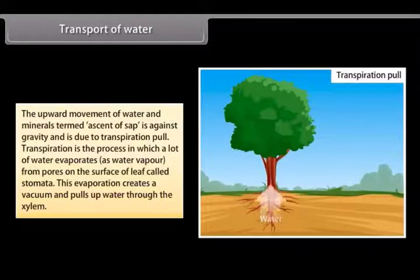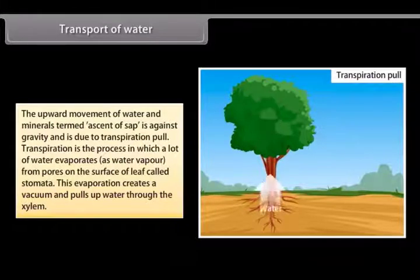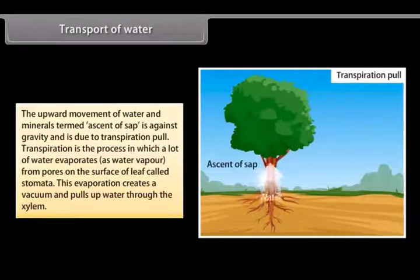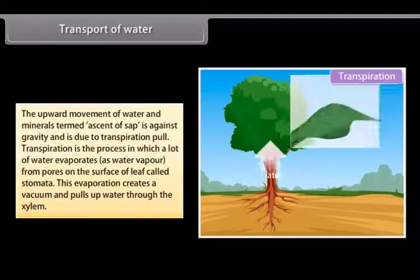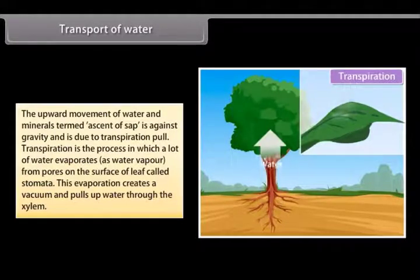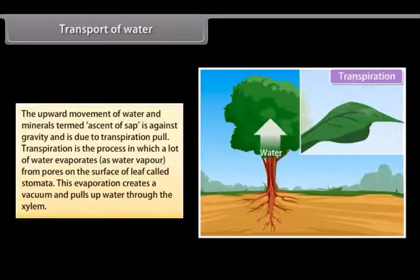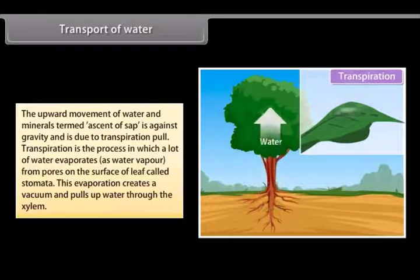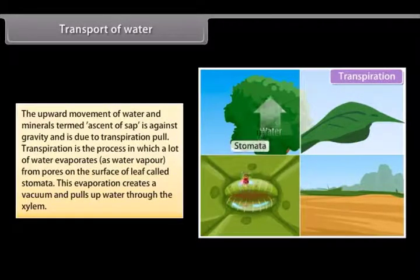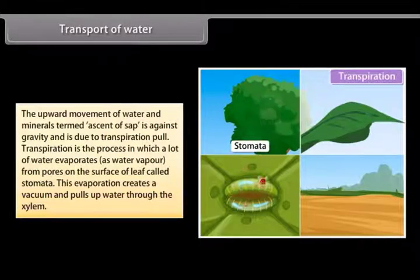Transport of water. The upward movement of water and minerals termed ascent of sap is against gravity and is due to transpiration pull. Transpiration is the process in which a lot of water evaporates as water vapour from pores on the surface of leaf called stomata. This evaporation creates a vacuum and pulls up water through the xylem.